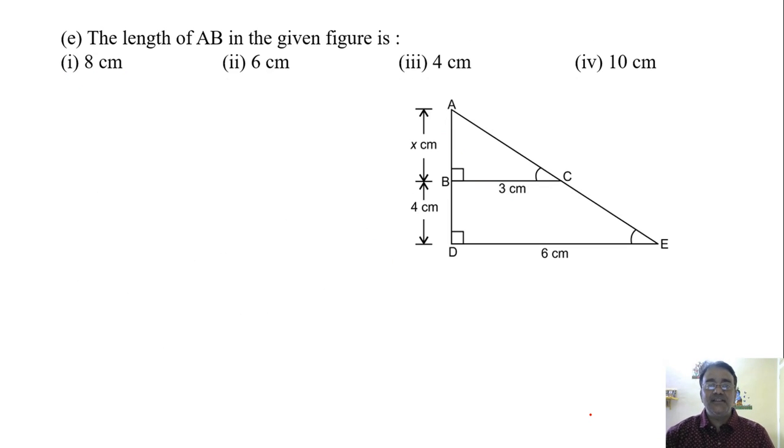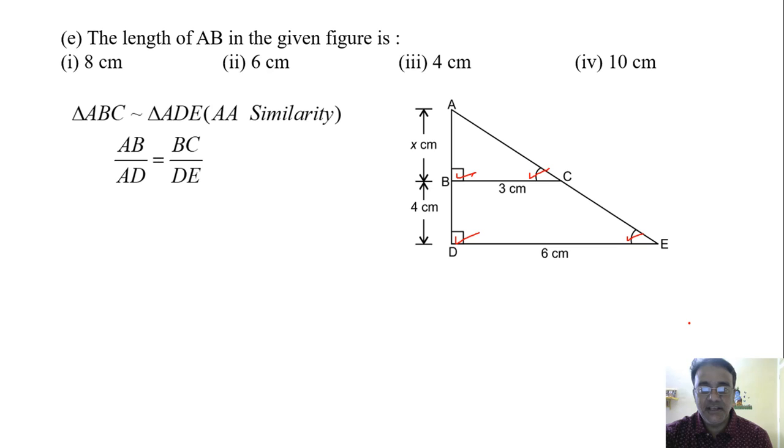And the last question. Now the length of AB in the given figure is. See here these two triangles are similar. Why? Because these two angles are 90 degree and these two angles are corresponding angles. So their corresponding sides are proportional. So AB upon AD is equal to BC upon DE.